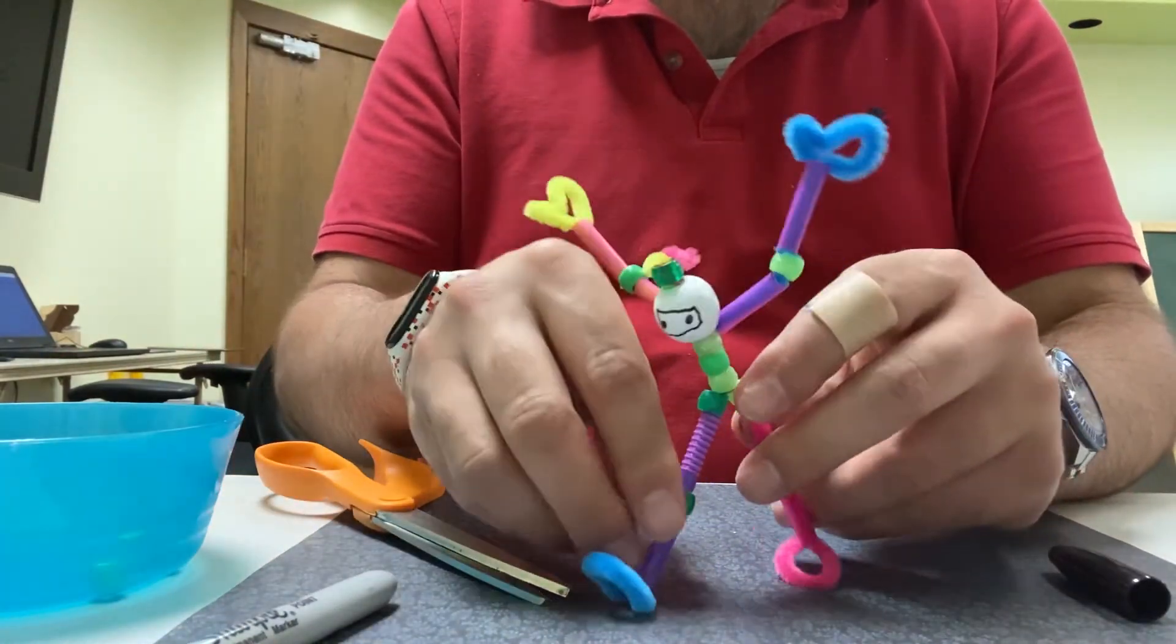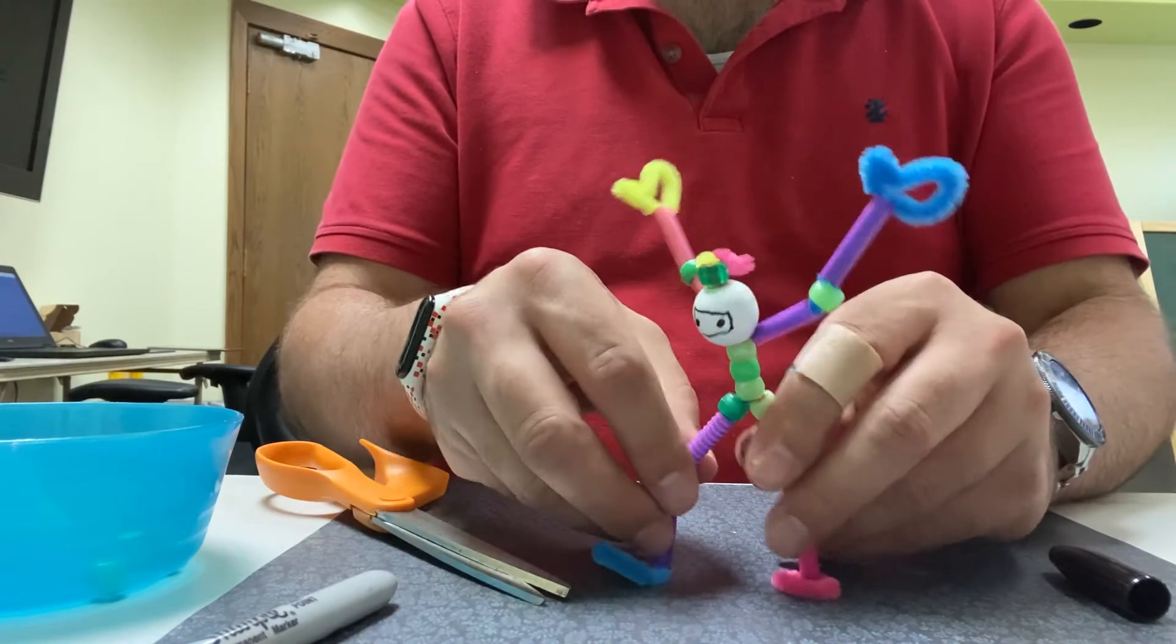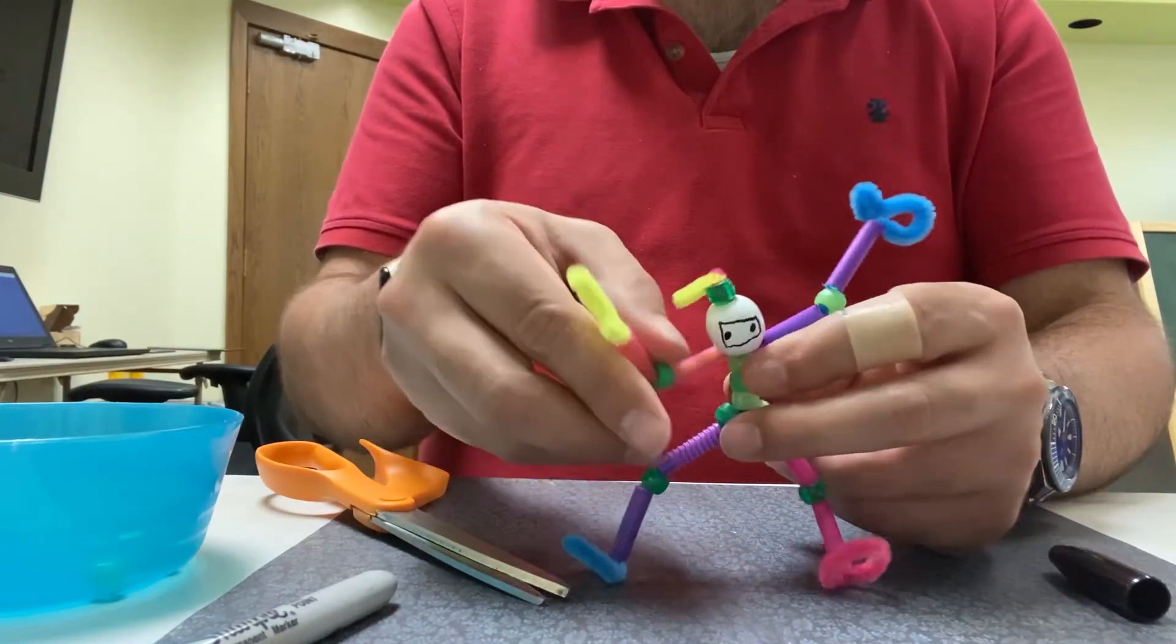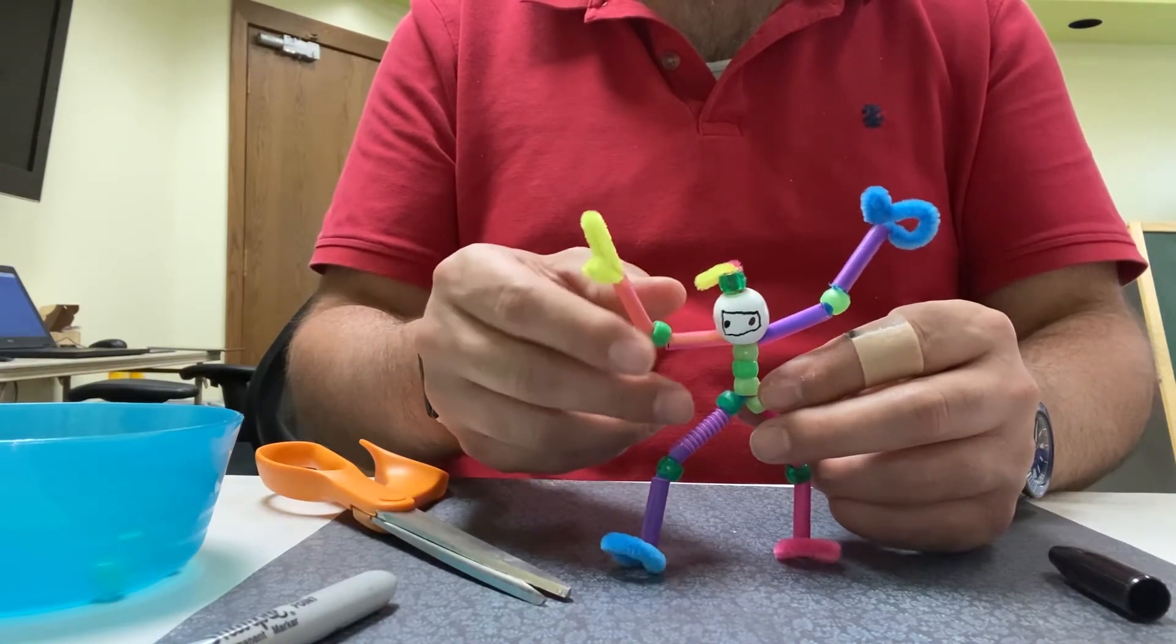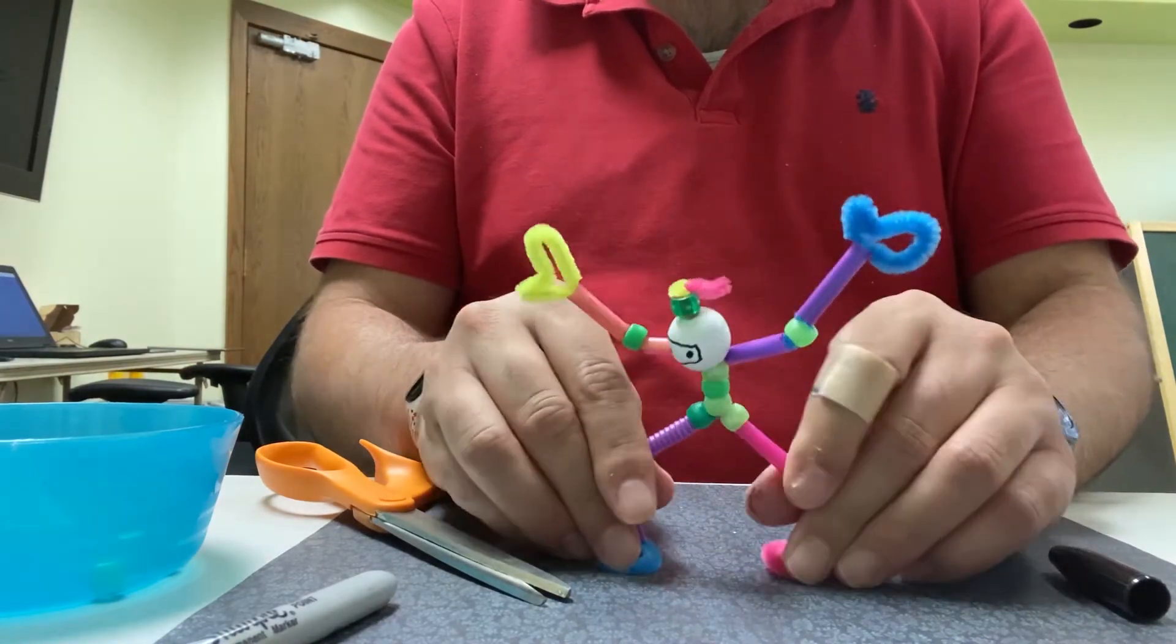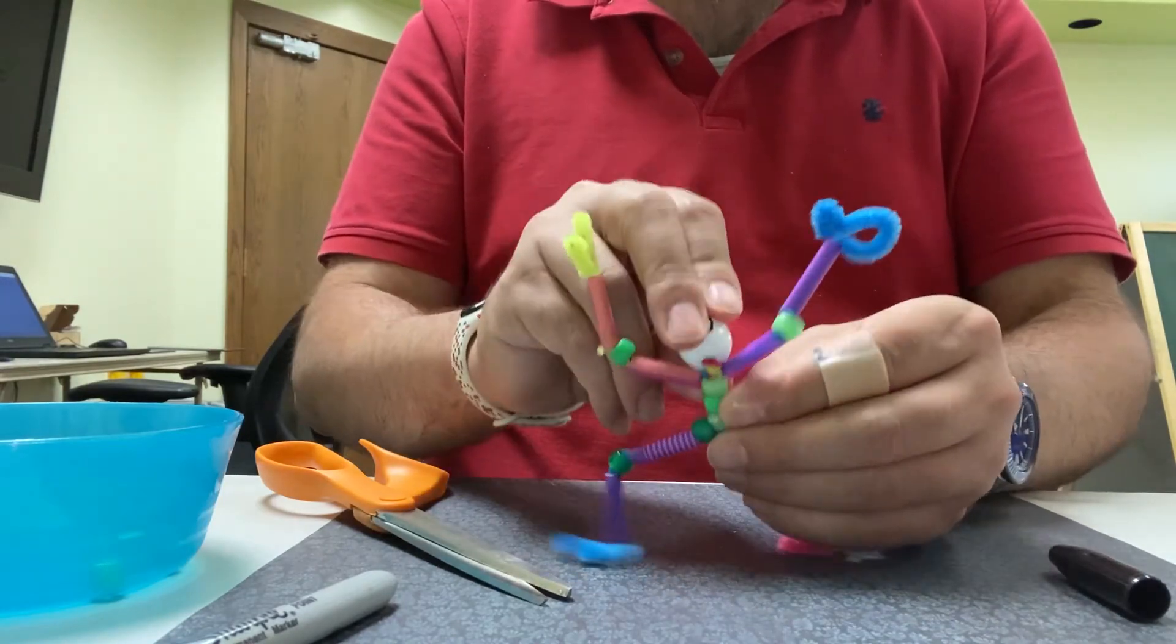There is your pipe cleaner ninja. And you can bend them and you can shape them. You can have them hang from the rafters or hide them around the house. You can make weapons for them. The greatest part is they're fully bendable, fully poseable.